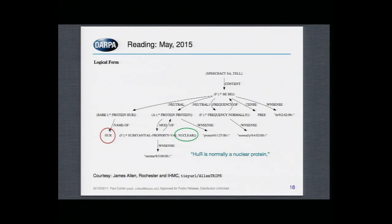But here's where it starts to get troublesome. It says that being nuclear is a property of the protein. That's actually not what the sentence says. What the sentence says is that the location of the protein is normally the nucleus. In a sense it's got it wrong; in another sense it's got it right — there are such things as nuclear proteins. It just doesn't know that nuclear proteins live in the nucleus.